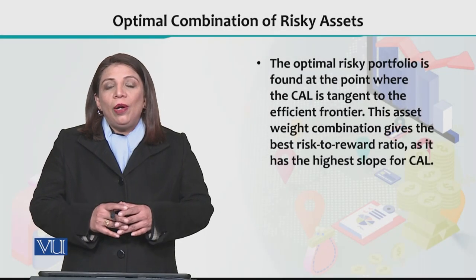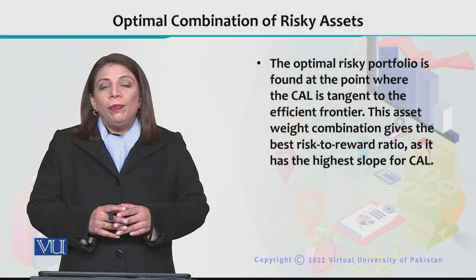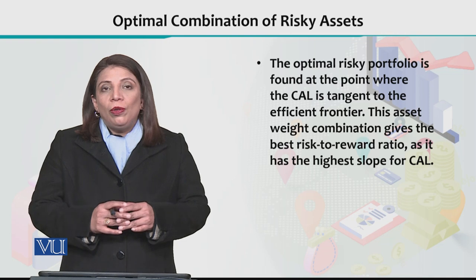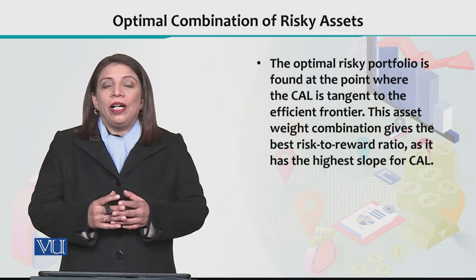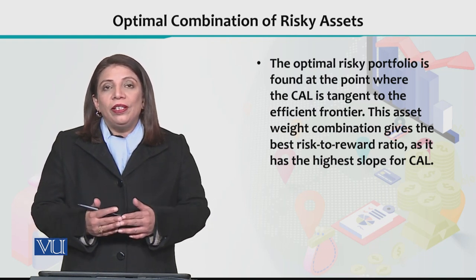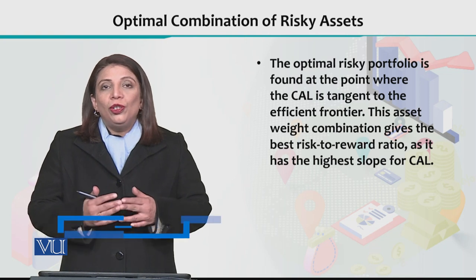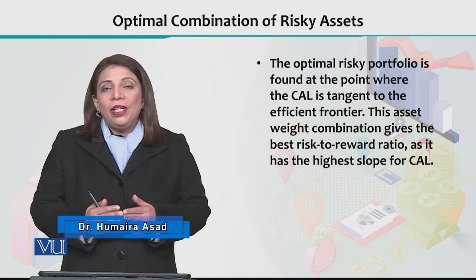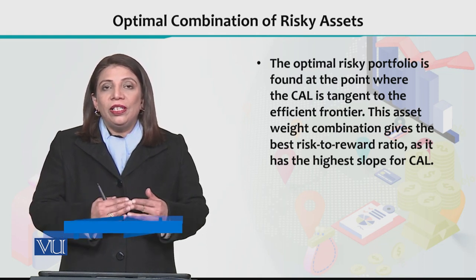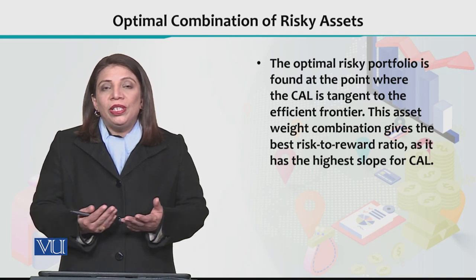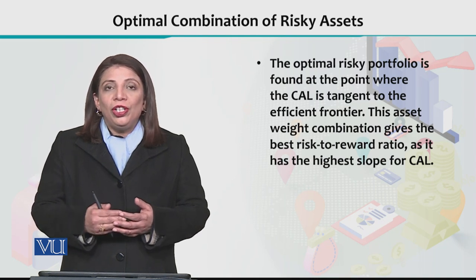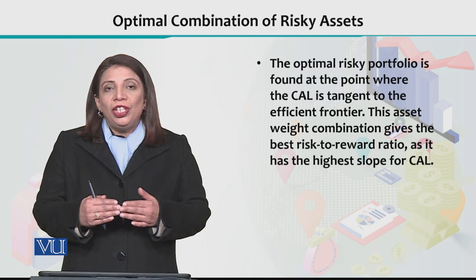In this section I will explain how the preferred portfolio is selected. Firstly, we need to understand the concept of how the optimal combination of risky assets is identified. We look at the capital allocation line and then we look at the efficiency frontier. We have already discussed these two concepts. The capital allocation line explains all possible combinations of risky asset and risk-free asset given a certain amount of investment.